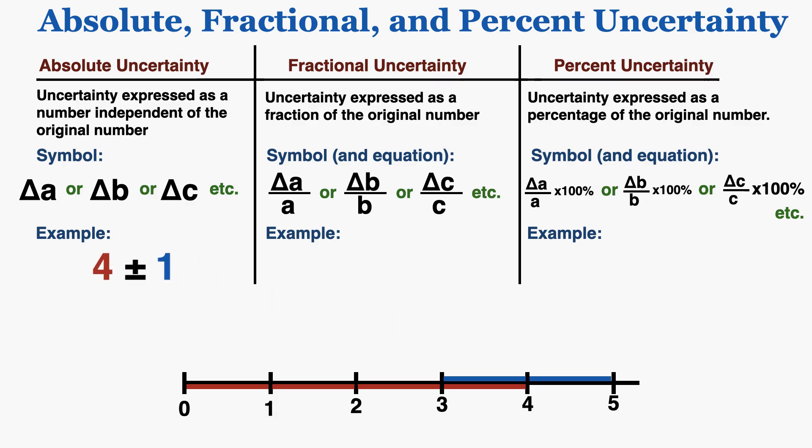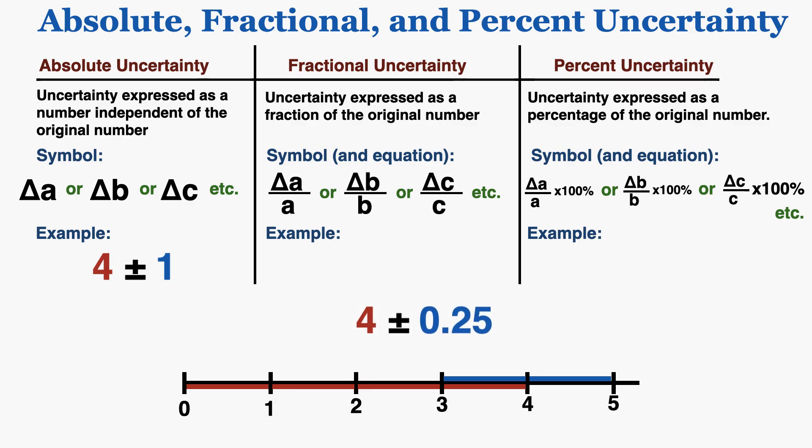Now I'll write the same number and uncertainty with fractional uncertainty. I need to understand what fraction the uncertainty is of the number. I can see that 1 fourth of my number is uncertain — 1 fourth of my total measurement. It's not the full range from 3 to 5; it's half of that range, because we usually express uncertainty as half of the full range. So 1 fourth, expressed as a decimal, is 0.25, meaning 0.25 times my measurement is uncertain. This is how I would express that uncertainty as fractional uncertainty.